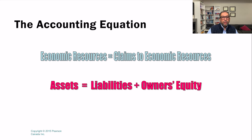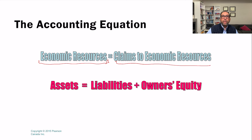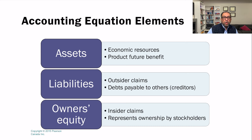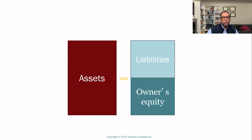Economic resources, which are assets, are equal to the claims to those economic resources. Liabilities represent the external claims on economic resources, and owners' equity represents the internal claims. Assets produce future benefits for the business; liabilities are outsider claims and debts owed to creditors; and owners' equity is the insider claim representing ownership by the stockholders.